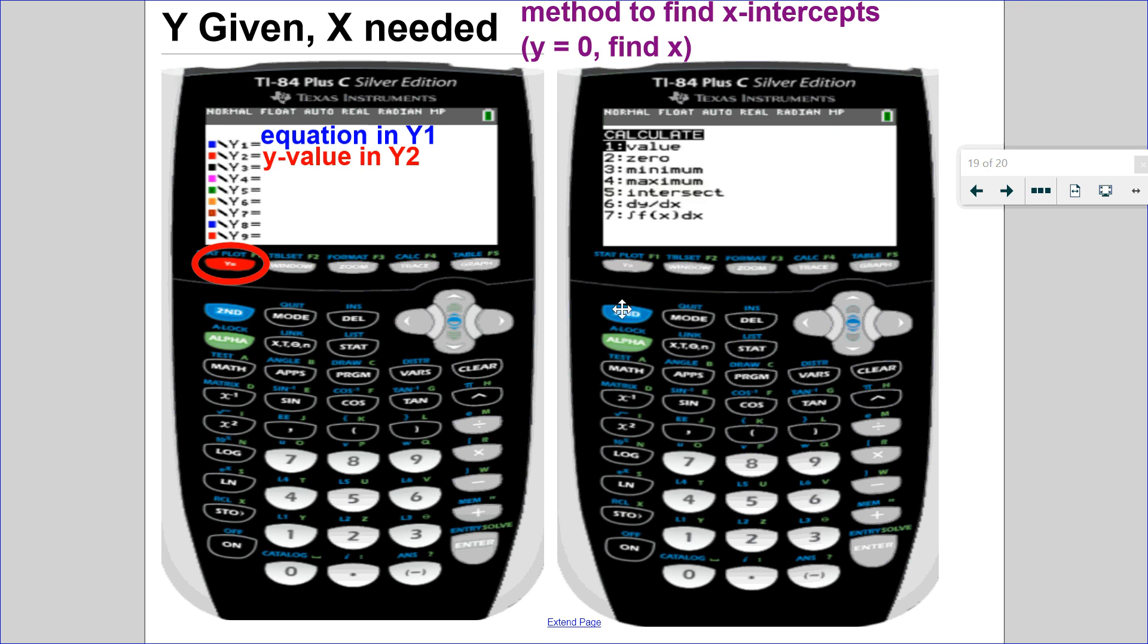Once I've done that, I want to get into my calculate menu, and I access that by doing second trace. And I look at my calculate menu, I want option number five, which is intersect.